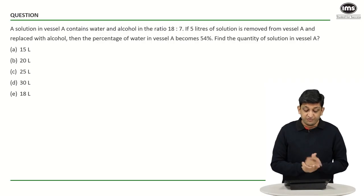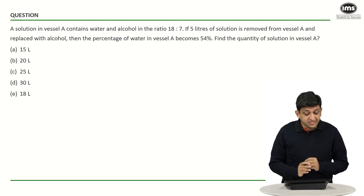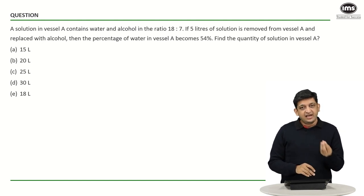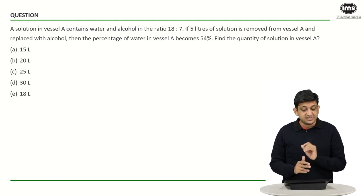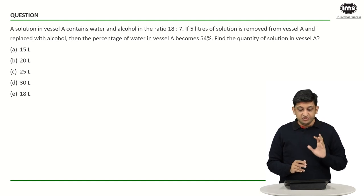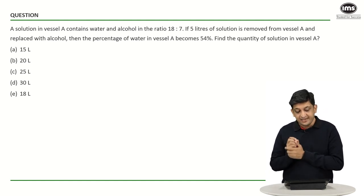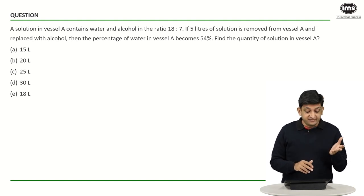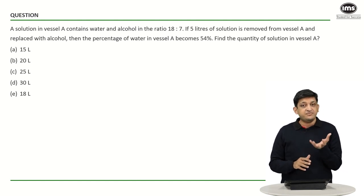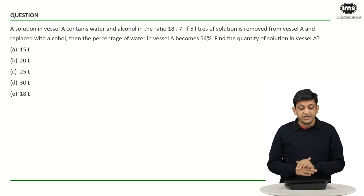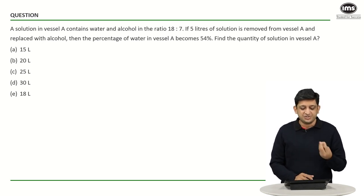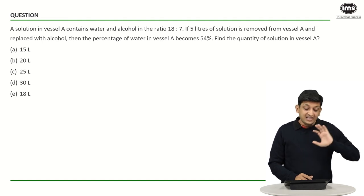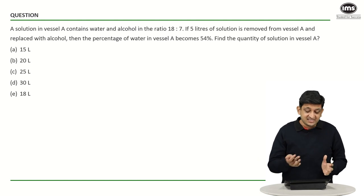If you look at the first question: a solution in vessel A contains water and alcohol in the ratio 18:7. Now, 5 liters of the solution has been removed from vessel A and replaced with alcohol, and then the percentage of water in vessel A becomes 54 percent. Find the quantity of solution in vessel A. One way of solving this is by assuming the solution in vessel A is 25x, where 18x is water and 7x is alcohol.